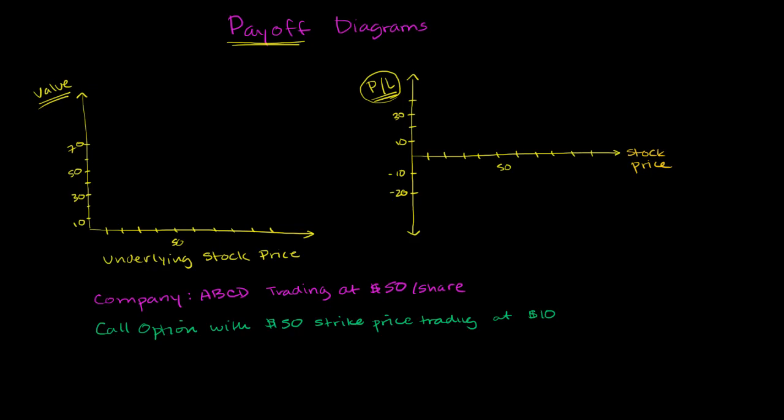So with that said, we have company ABCD trading at $50 per share. And then we have a call option with a $50 strike price or $50 exercise price trading at $10.